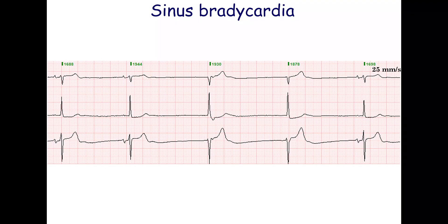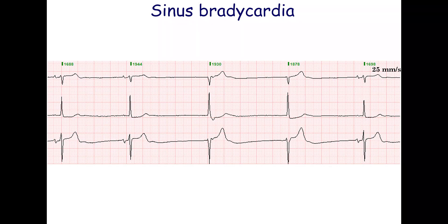Note the 3rd and 4th QRS complexes that are not preceded by P-waves. They are of junctional origin. Sometimes, several escape complexes may occur in a row without a sinus beat. These complexes form a rhythm.